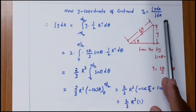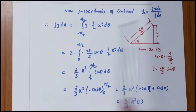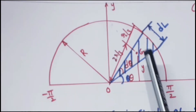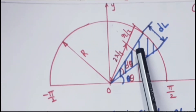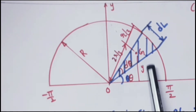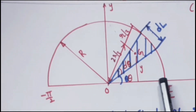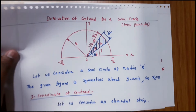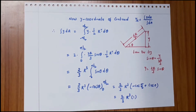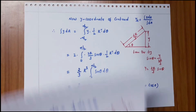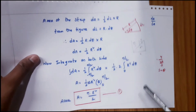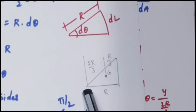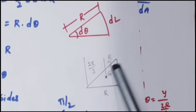The y-coordinate of the centroid is yc = ∫y·dA / ∫dA. Here y is the distance from the centroid of the strip to the x-axis. The strip is in the form of a triangle, so we need the centroid of the triangle.